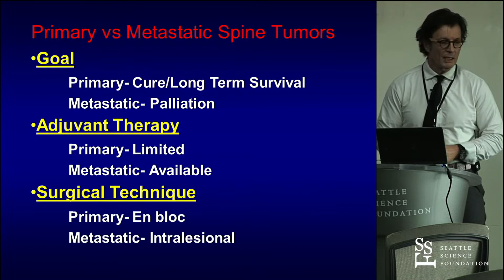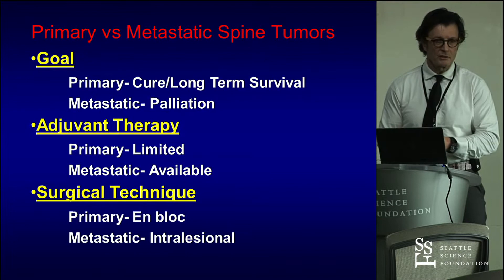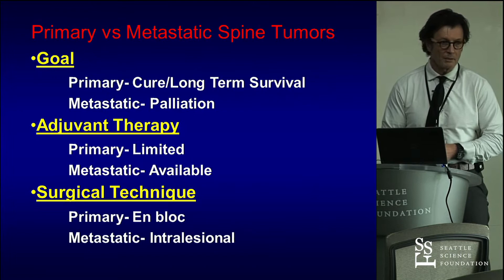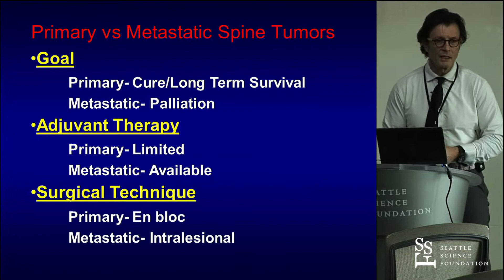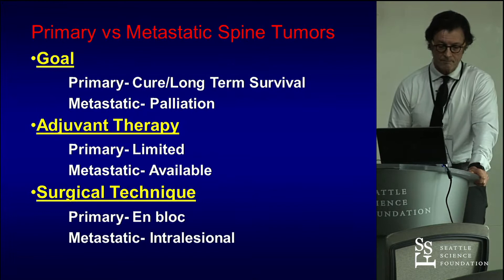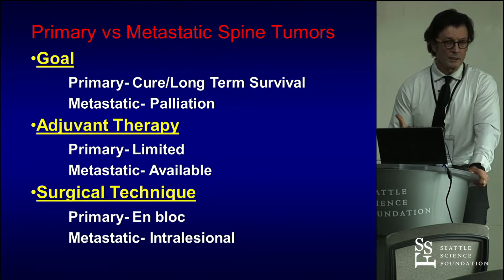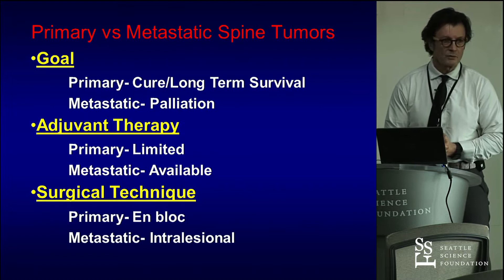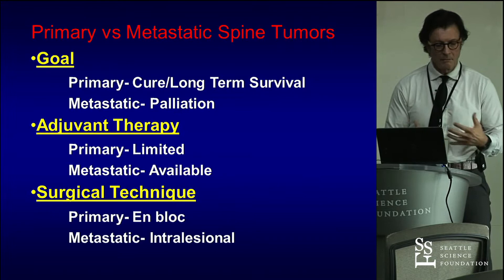You have to think about adjuvant therapy. What we do as surgeons is useless if we don't know the adjuvant therapy options available. For primary bone tumors, unfortunately options are very limited — chemotherapy options and radiation therapy options are not that great. It really boils down to surgical intervention for primary tumors. For metastatic disease, there are many adjuvant therapy options, and you have to consider whether to treat with adjuvant therapy instead of surgery. The surgical technique differs: primary bone tumors call for en bloc resection if possible; metastatic disease is mostly intralesional resection.